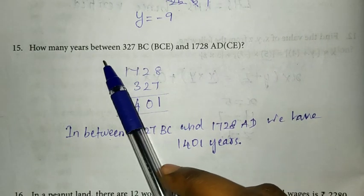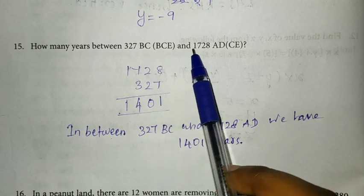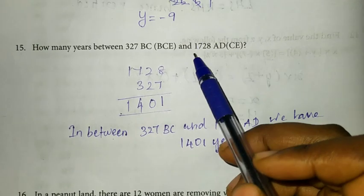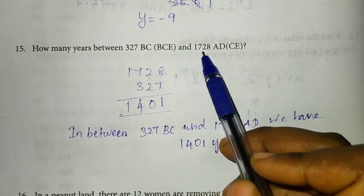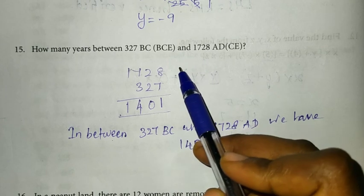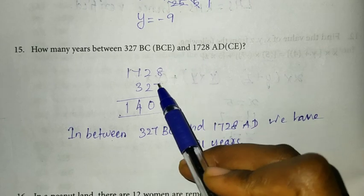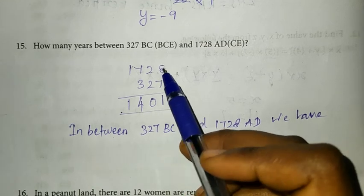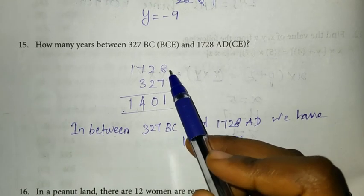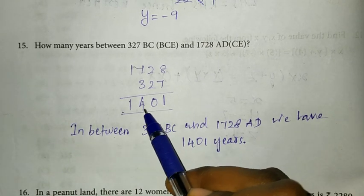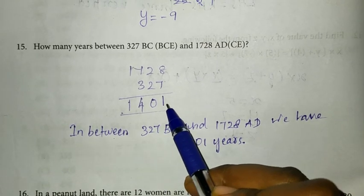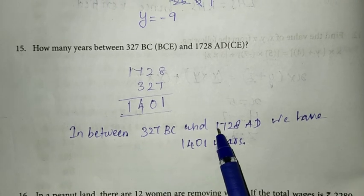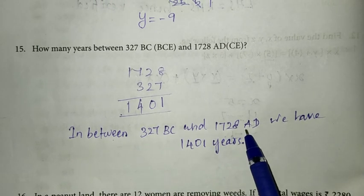Fifteenth question: how many years between 327 BC and 1728 AD? We subtract 327 from 1728, giving 1401 years between 327 BC and 1728 AD.